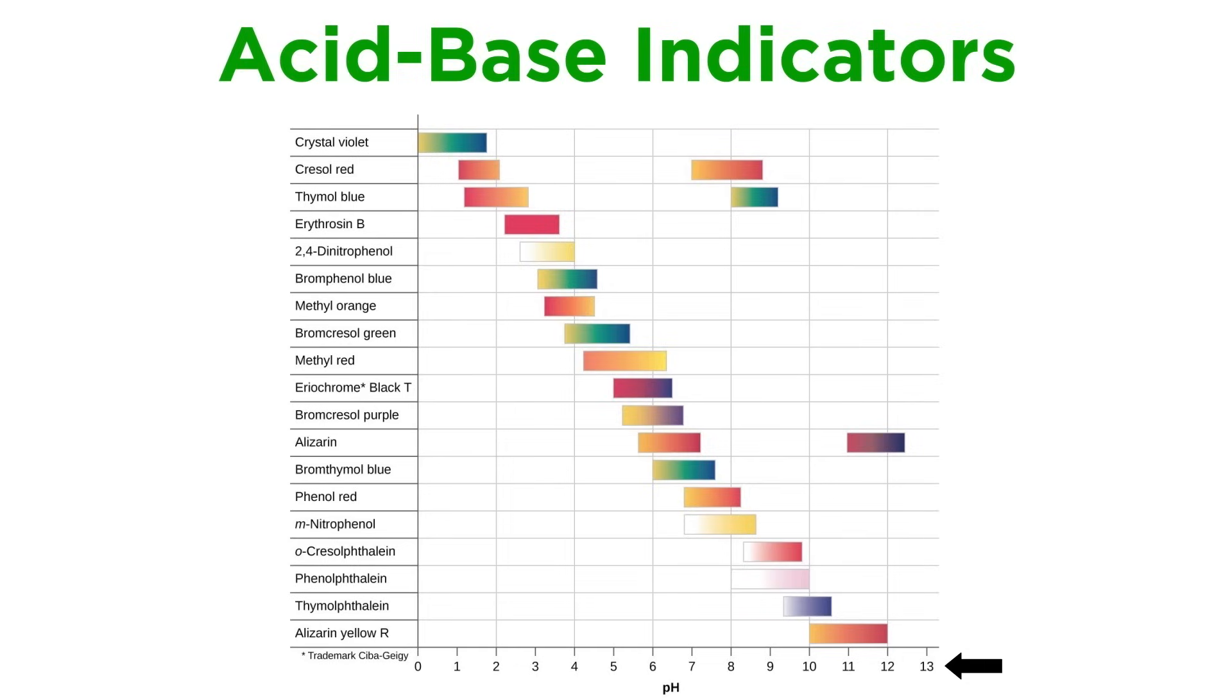When performing a titration, we will select an indicator with a color change interval that is close to the expected pH of the equivalence point.